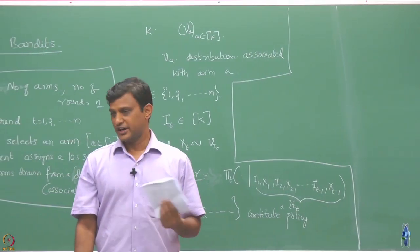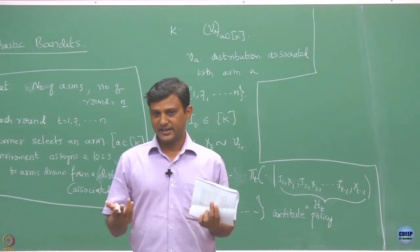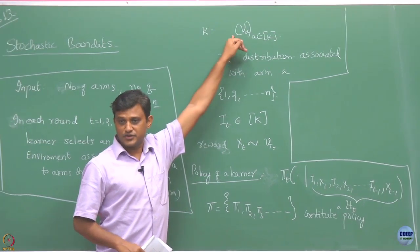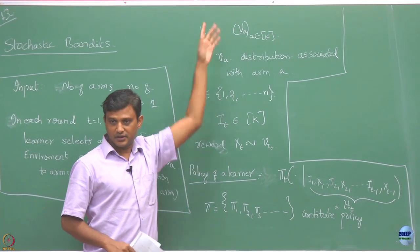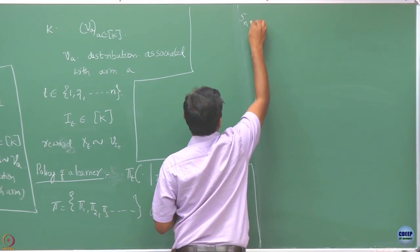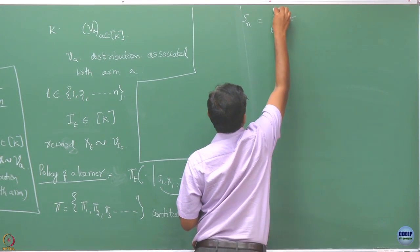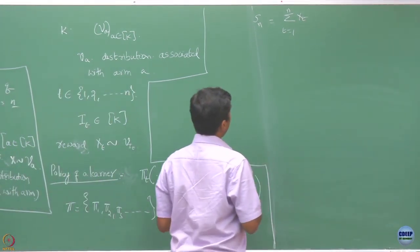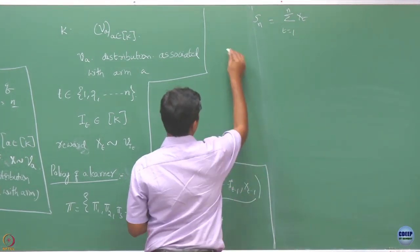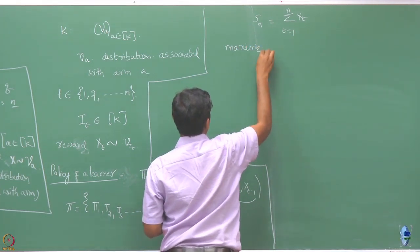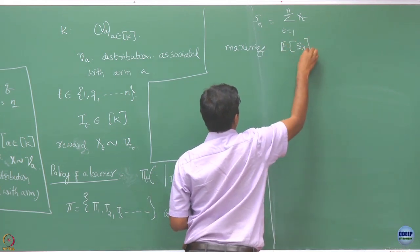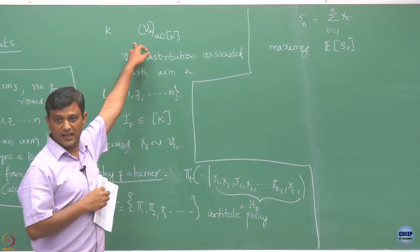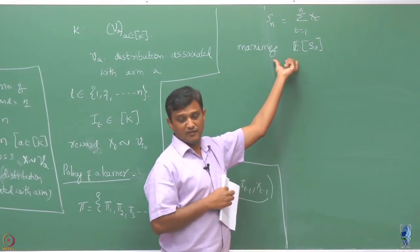Now, what is the objective here? Your objective is to accumulate as much reward as possible. But you do not know the distributions — you do not know a priori what distribution each arm is associated with. So if you run for n rounds, your total accumulated reward is some quantity, and your goal is to maximize the expected value of the total reward S_n over n periods, and you have to do it without knowing the distributions.